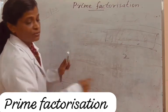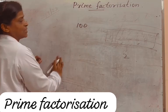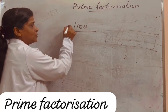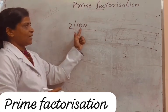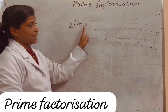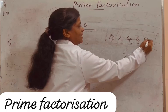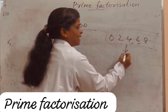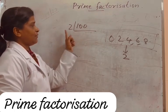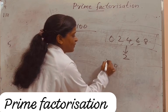Now, let us do prime factorization of 100. We have to start with the smallest prime number, 2. Is 100 divisible by 2 or not? How will you check? If the last digit is 0, 2, 4, 6, or 8, the number is divisible by 2. The last digit is 0, so it is divisible by 2. 100 divided by 2 — if you don't know, you should do long division to find out.